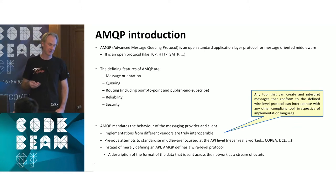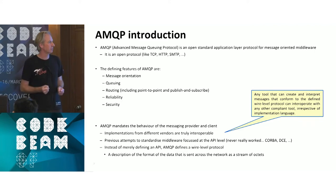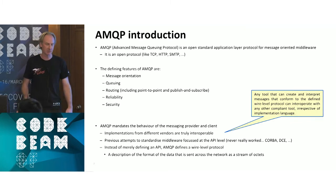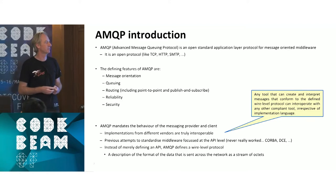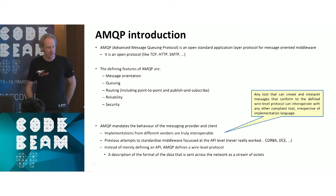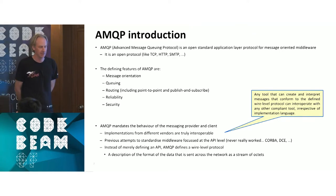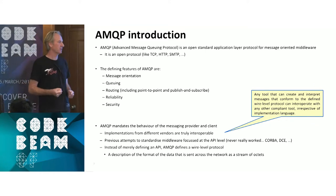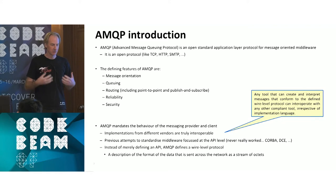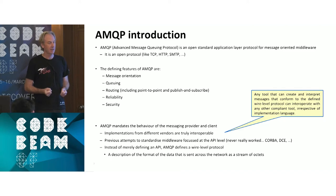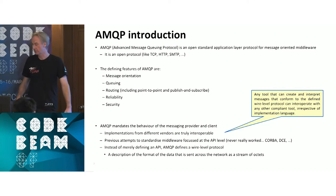John had suffered the nightmares of buying proprietary middleware integration products that don't talk to one another — implementing gateways, supporting those gateways, paying horrendous license fees. He decided there had to be a better way and came up with a vision for a mostly encompassing message queuing product that did everything he needed at JPMorgan Chase, and maybe a little bit more. That was essentially how the protocol started.